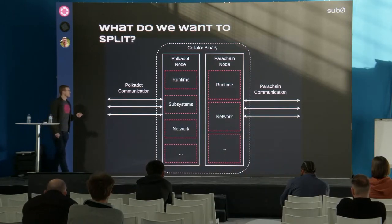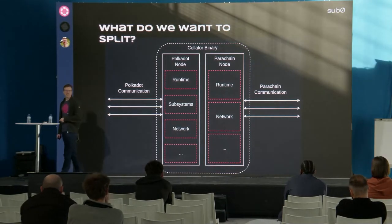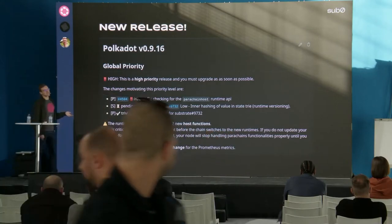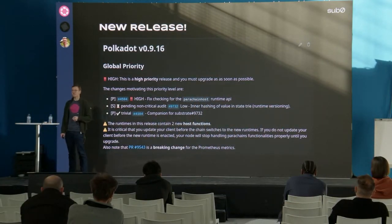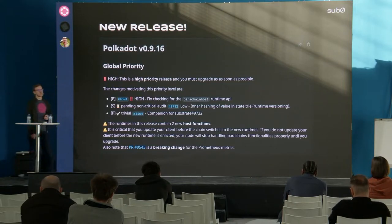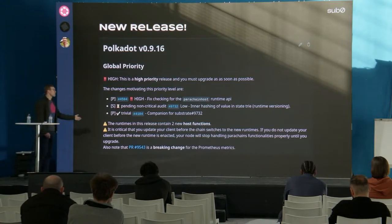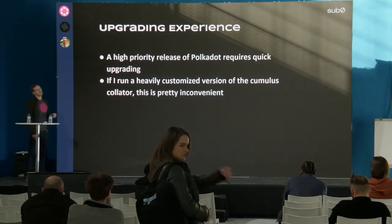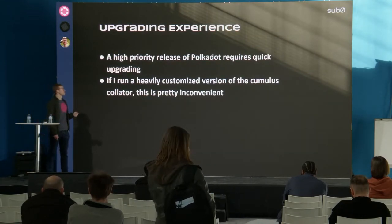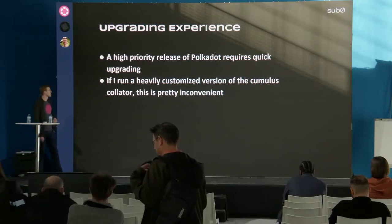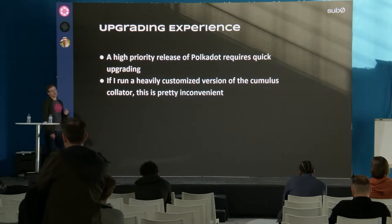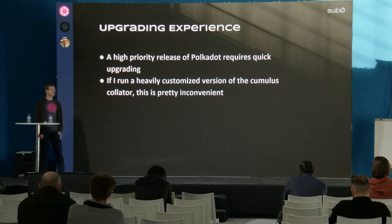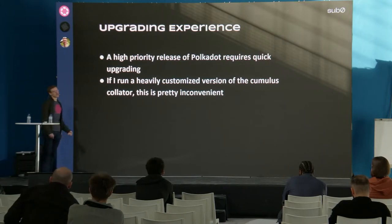Let's imagine we are running one of these collators and a new release of Polkadot comes along. It's a high-priority release — some new host functions have been added — and it says you need to switch to this new release before the new runtime arrives at your collator. Since the Polkadot node is part of the collator, this forces us to upgrade our code. This is actually pretty inconvenient: we are basically forced from the outside to modify our collator, and it would be nice if we had some way to avoid this inconvenience.